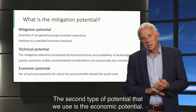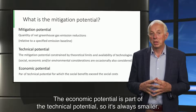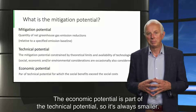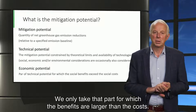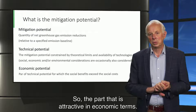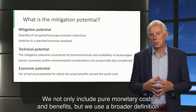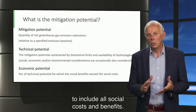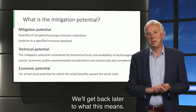The second type of potential we use is the economic potential. The economic potential is part of the technical potential, so it is always smaller. We only take that part for which the benefits are larger than the costs — the part that is attractive in economic terms. We not only include pure monetary costs and benefits, but we use a broader definition to include all social costs and benefits. We will get back later to what this means.